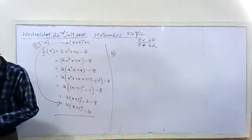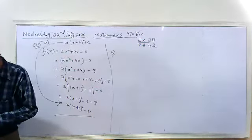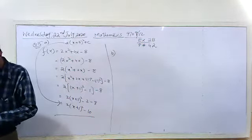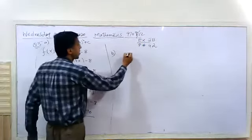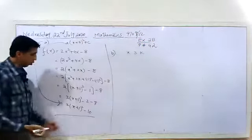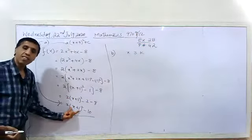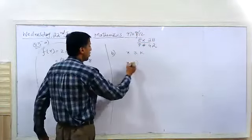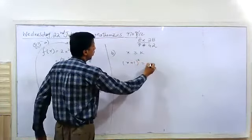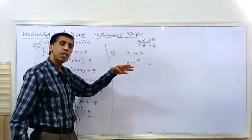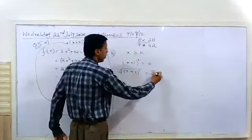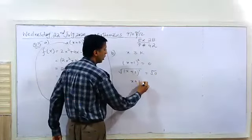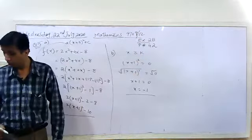This was the a part of question number 15. Now the b part: find the least value of k for which the function is one-to-one. In your question the range is given as x greater than or equal to k. Take the scared value — keep (x+1)² equal to 0 to get the least value. Remove the square by taking square root of both sides, and you will get the least value of k is minus 1. This was question number 15.